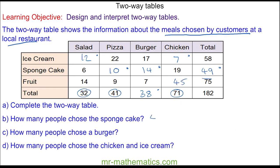So you can see 49 people chose a sponge cake, 38 people chose a burger, and seven people chose the chicken and the ice cream. Thank you for watching and I hope you found that useful. Thanks again and take care.